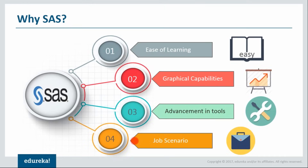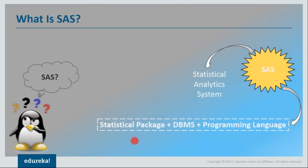Let us try and understand what SAS is exactly. To start with, SAS stands for Statistical Analytics System. As the name suggests, it is used for analytics — that is what it was designed for. There are many people who use it for various other things as well, but analytics is one of its most prominent features. It is a statistical analytical tool with database management and data management capabilities, and I talked about it being a great ETL tool with various extraction and transformation capabilities.